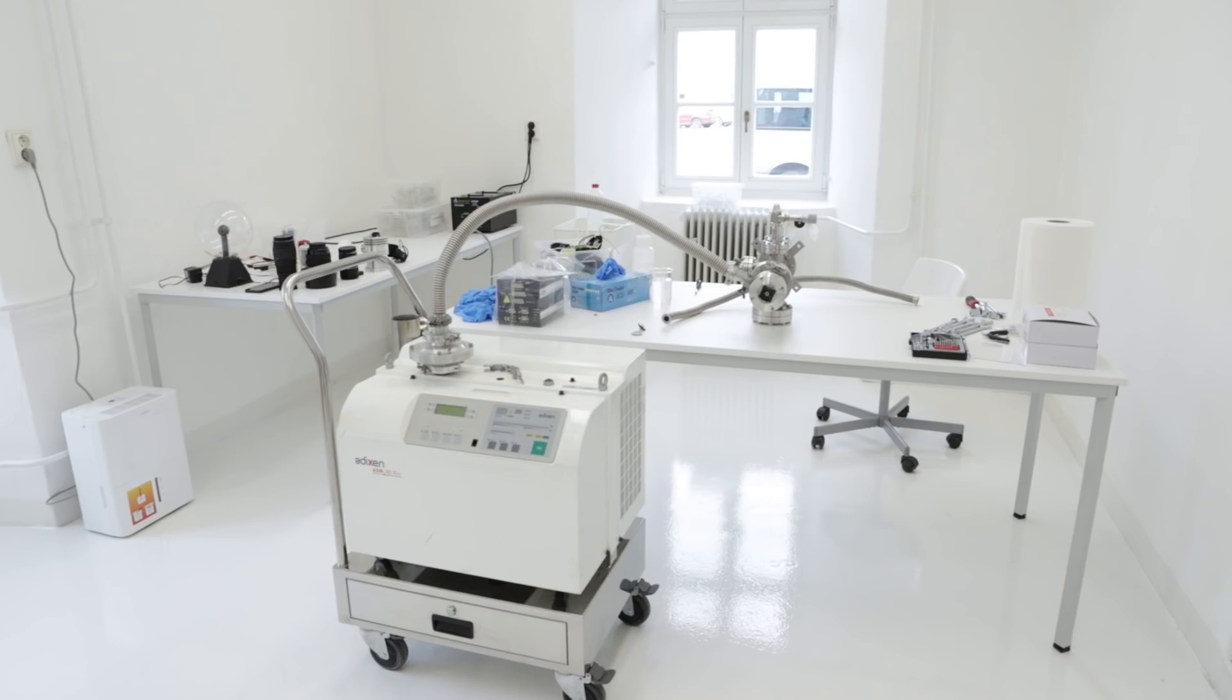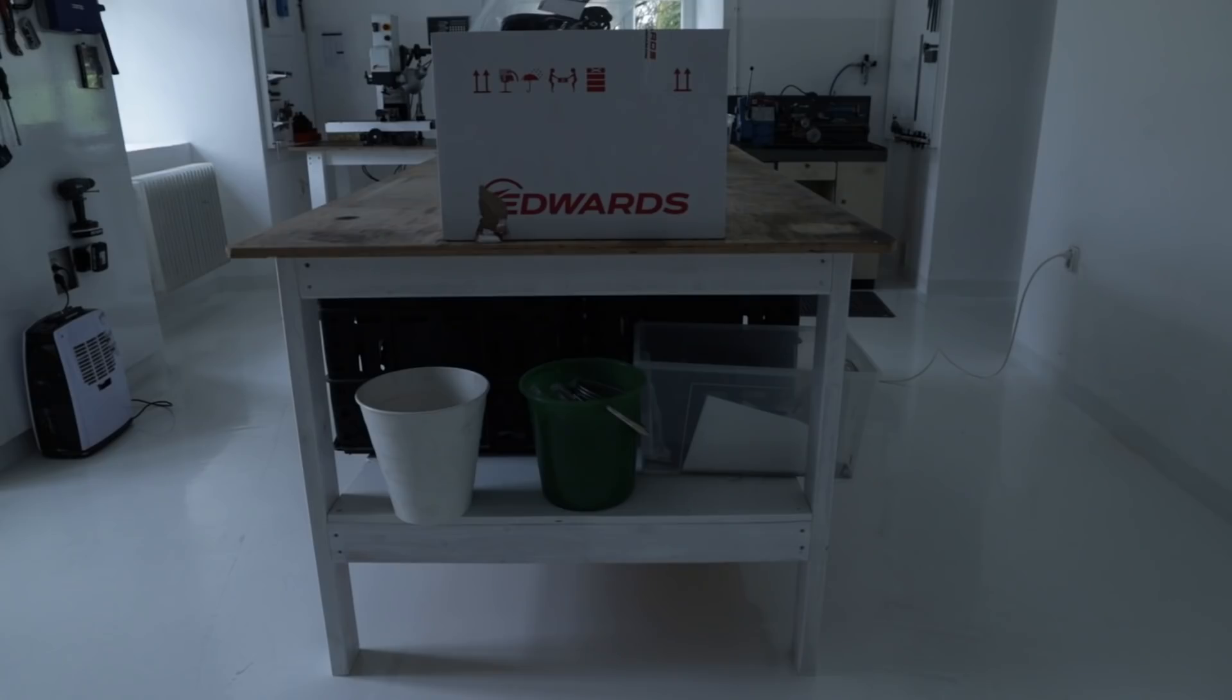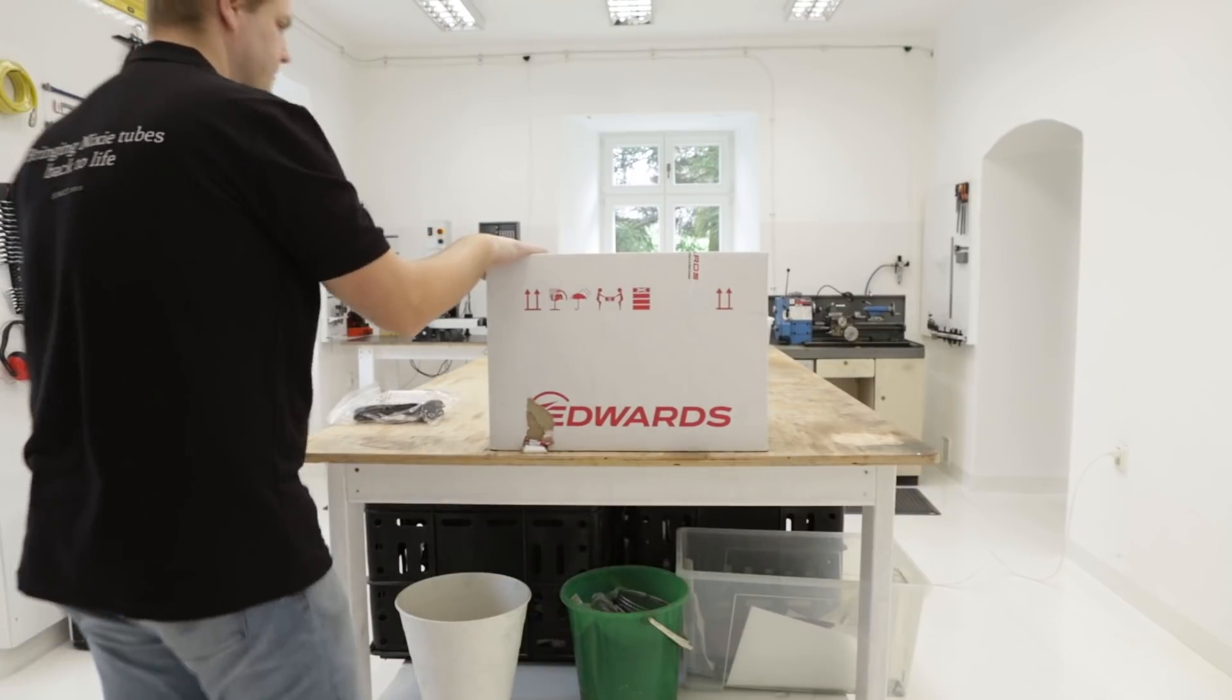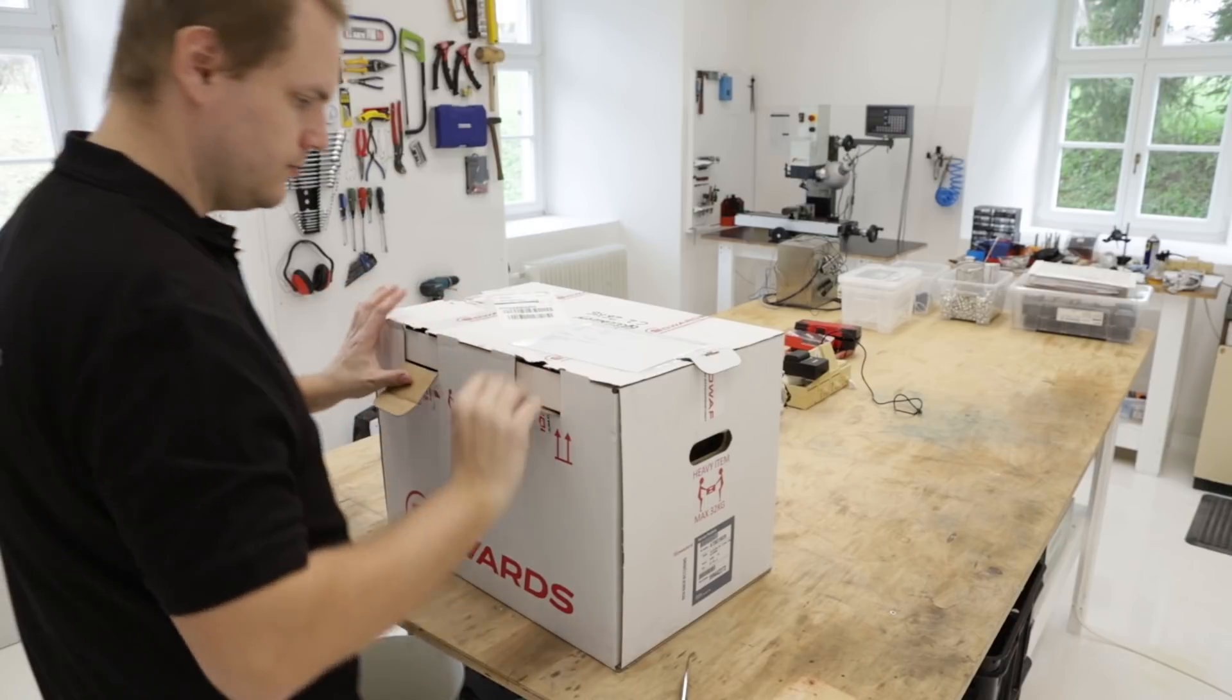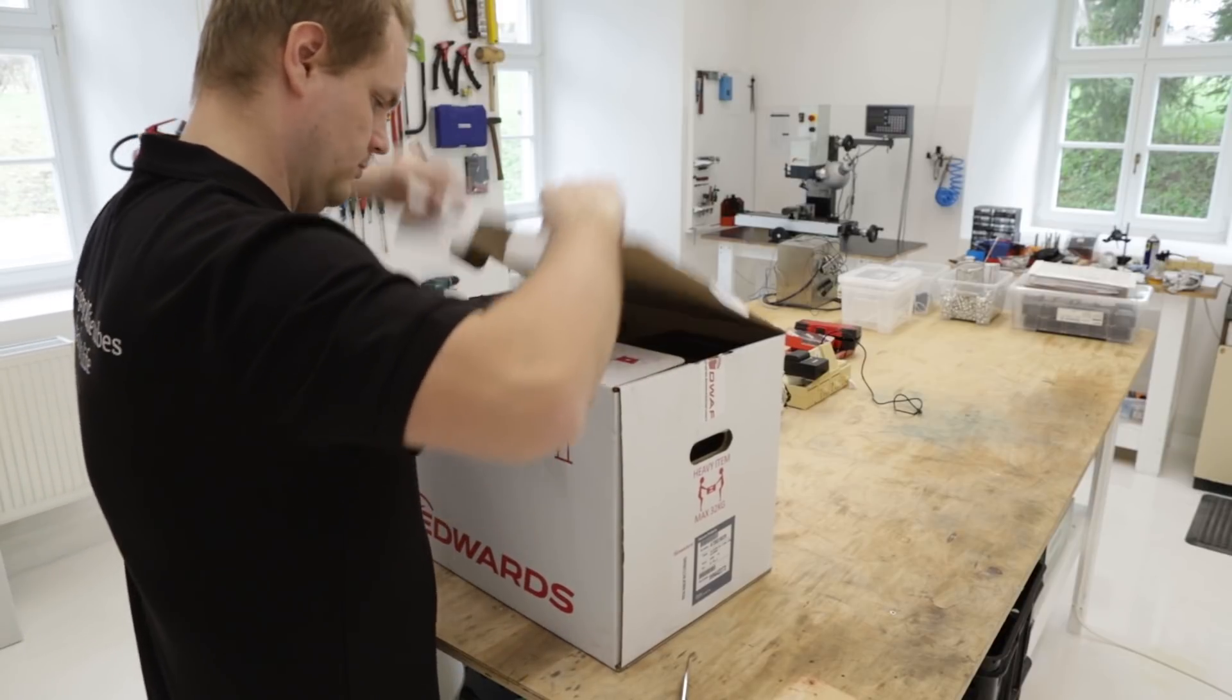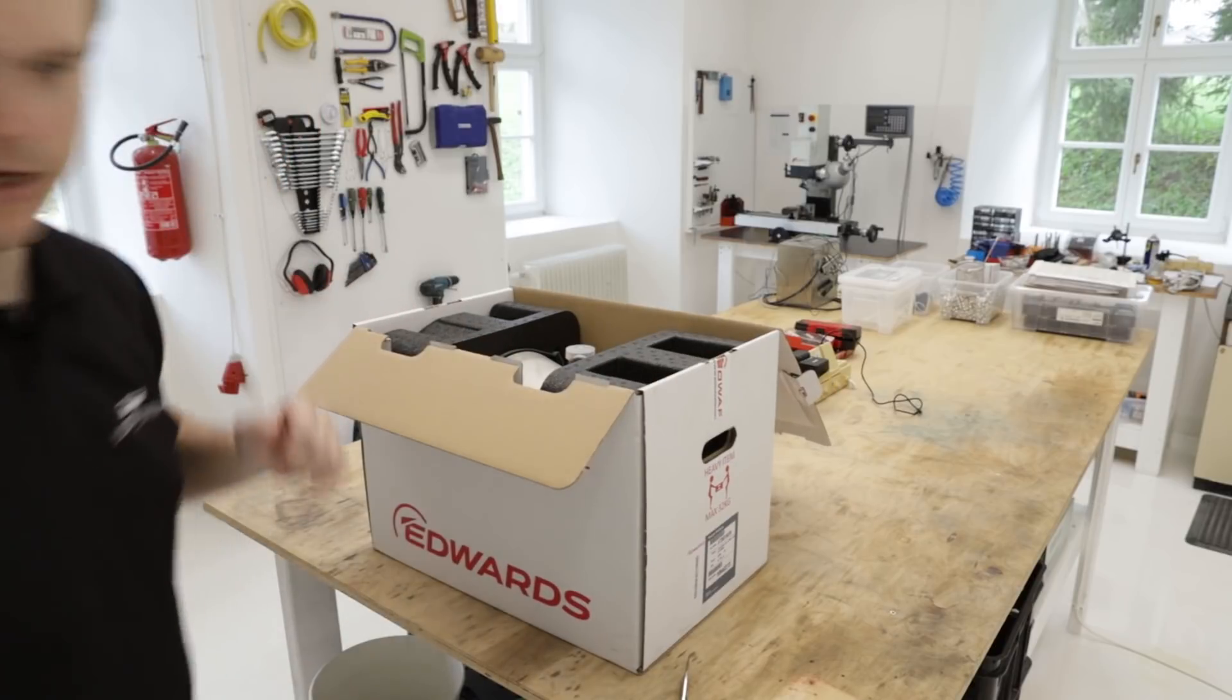Next step will be to unpack a roughing pump. So let's go for it. So here it is. It's the first piece of vacuum equipment that I purchased straight from the manufacturer. All the other equipment came second hand. It's bigger than I thought.